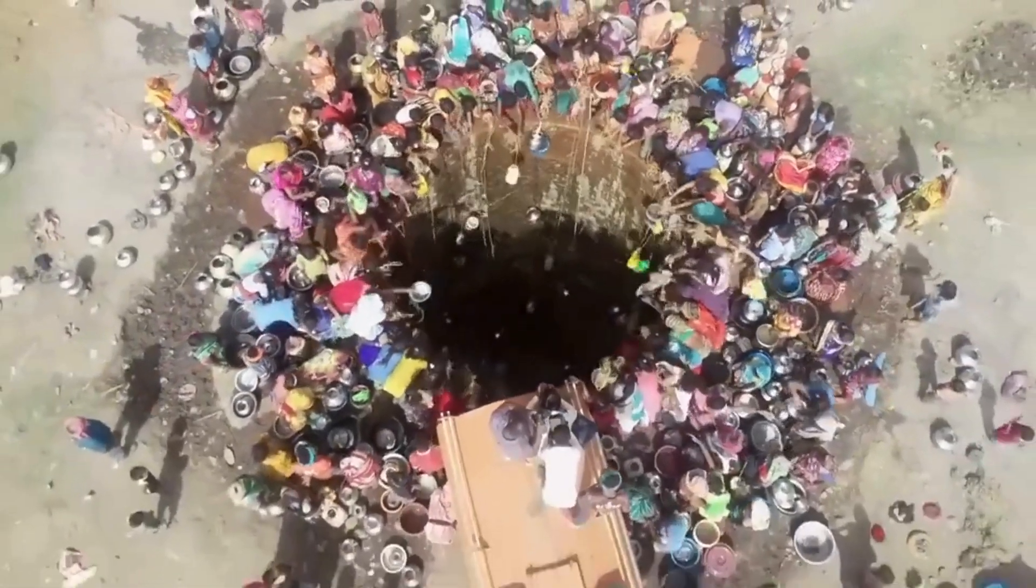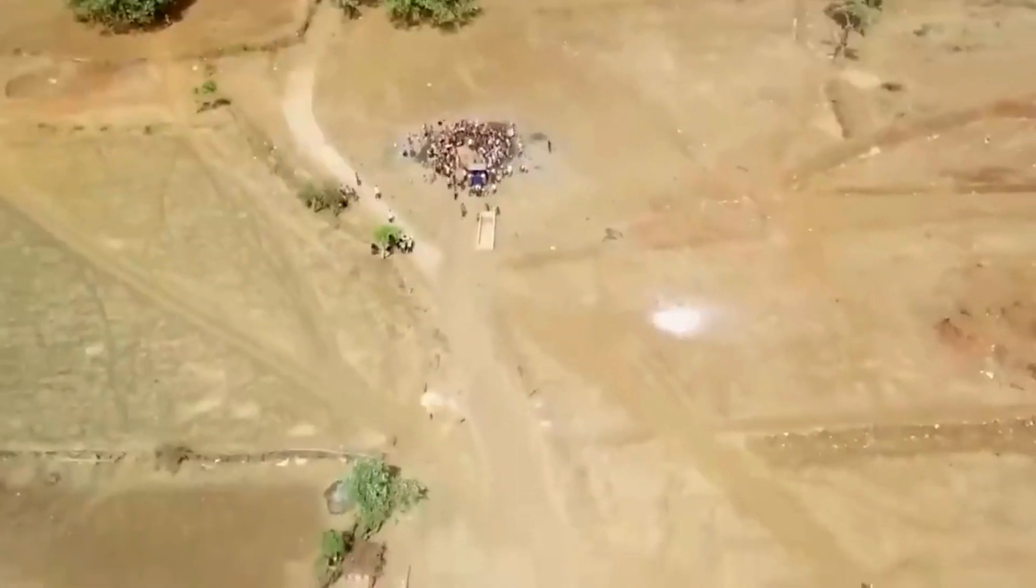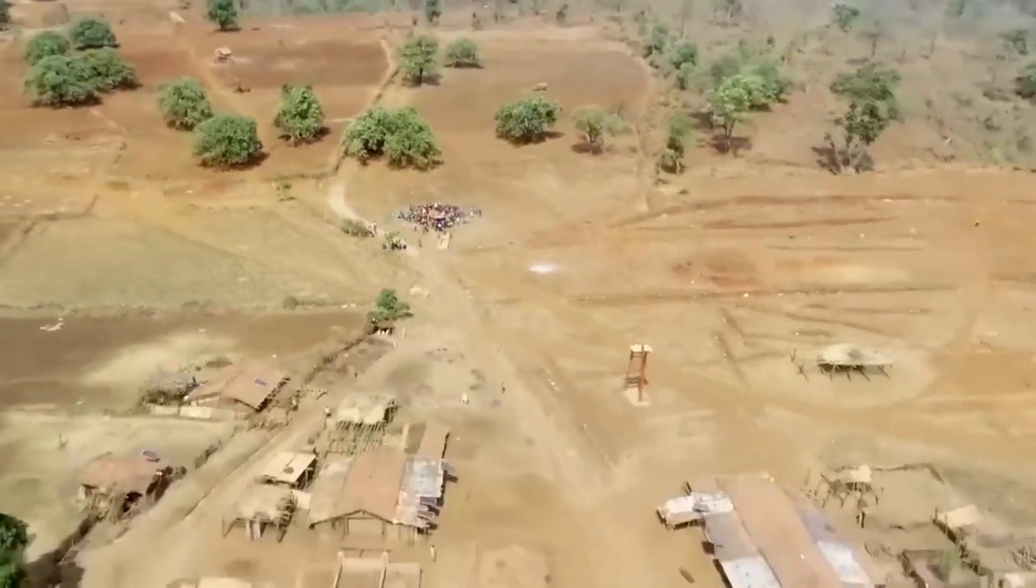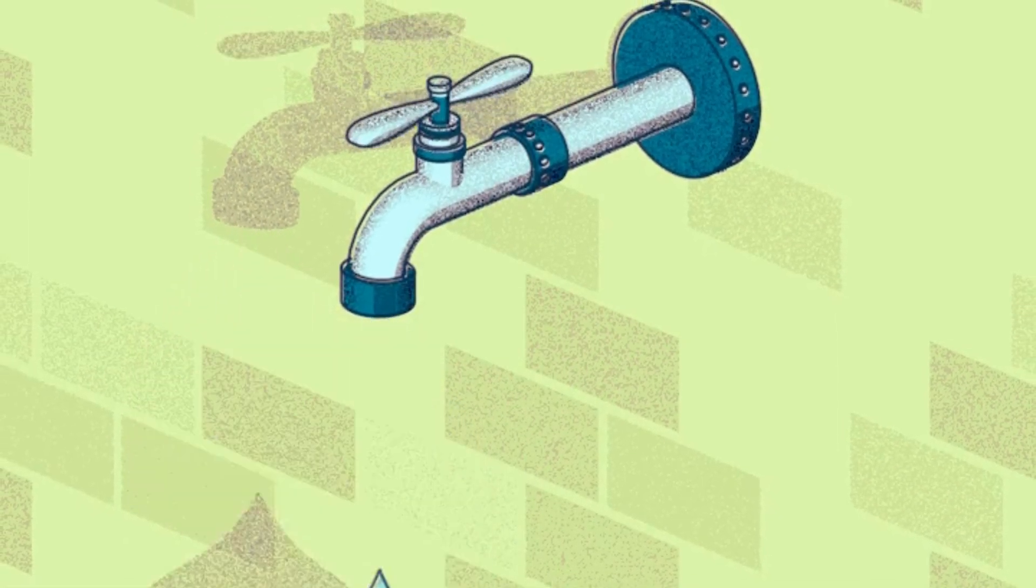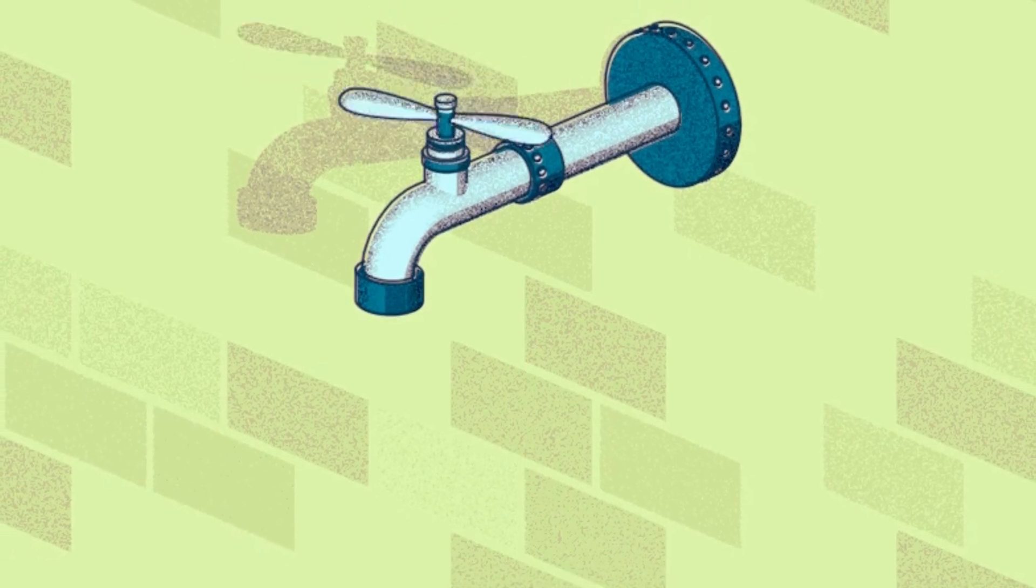Amidst a large number of countries suffering from severe water crises, with nearly two-thirds of the world's population experiencing water scarcity for at least a month each year, the quest for more sources of water has led researchers from Northwestern University in Illinois to discover a gigantic reservoir of water 700 kilometers beneath the Earth's surface.